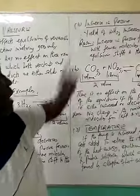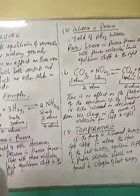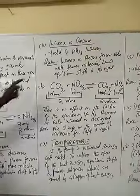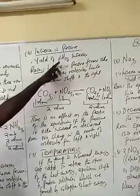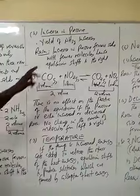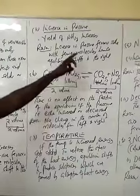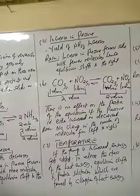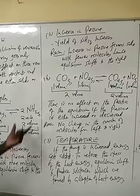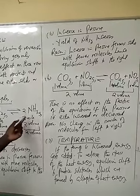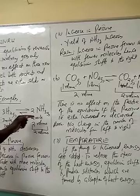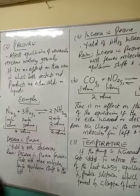An increase in pressure will result in more yield of ammonia. Because an increase in pressure favors the side with fewer molecules — that is to say, it will make the equilibrium shift to the right.